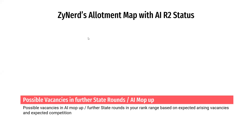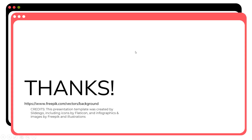All the data in the allotment map is actual data — admitted candidates list, allotted candidates data. However, whether an allotted candidate will join or not in state counseling may not be known until the state shares its admitted list, which happens after choice filling for All India mop-up. We will only update the All India Round 2 admitted list for states. You will need to make your own judgment on whether a candidate would join a state-allotted seat based on available information. Hope Zainat has been helpful throughout this counseling process — wishing you all the best.